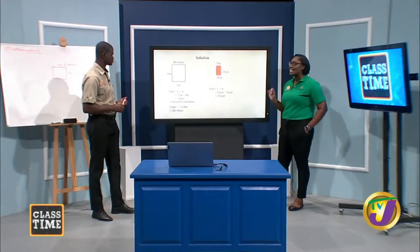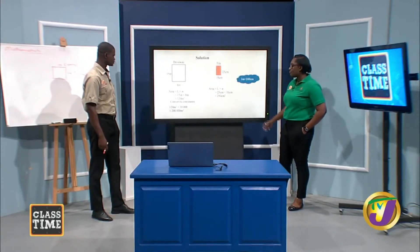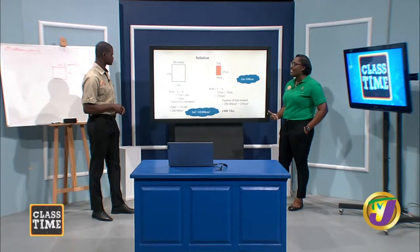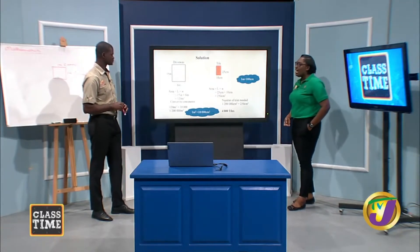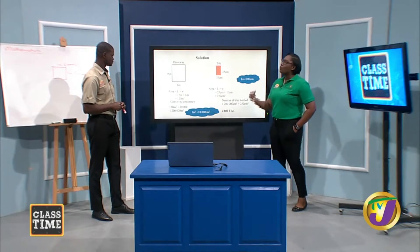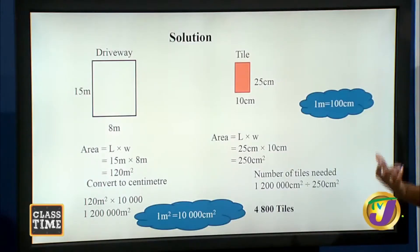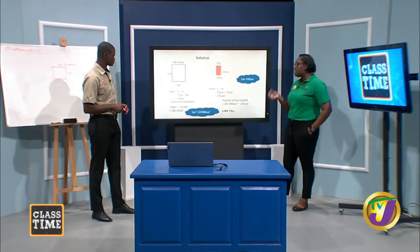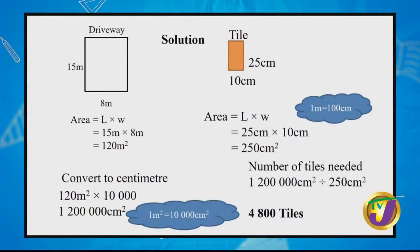Now we can determine the number of tiles needed: divide the area of the driveway by the area of each tile — 1,200,000 ÷ 250 = 4,800 tiles. That's a lot of tiles for a big driveway, especially when the tiles are only 25 by 10 centimeters.